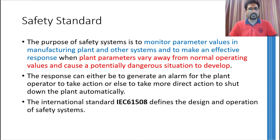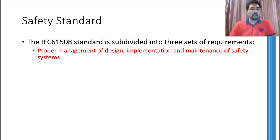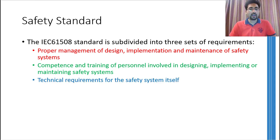The international standard IEC 61508 defines how an industrial safety system should be designed and installed. This standard gives guidelines related to various aspects of a safety system, and for certification an industry needs to follow these guidelines. The whole standard is divided into three major parts: the first deals with designing, implementation, and maintenance of safety systems; the second deals with competence and training of personnel involved in designing, implementation, and maintenance; and the third defines technical requirements for any safety system.